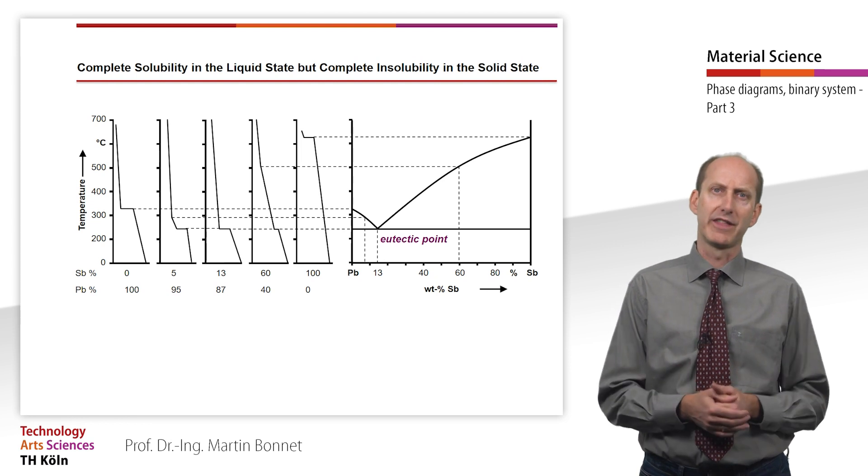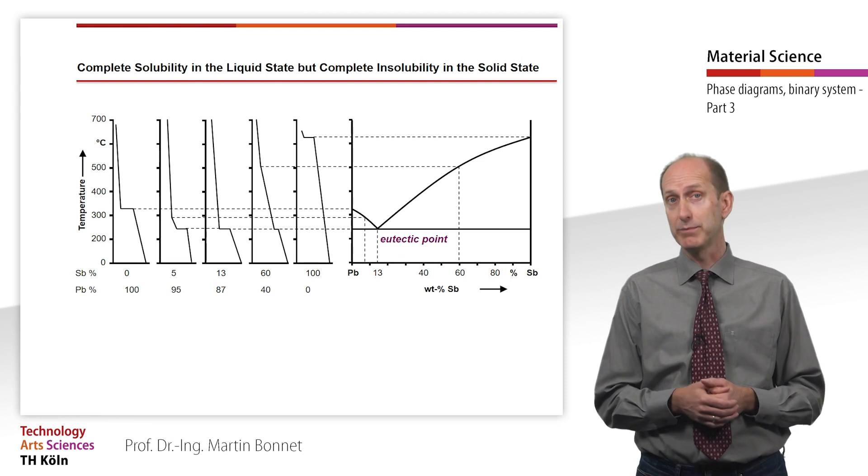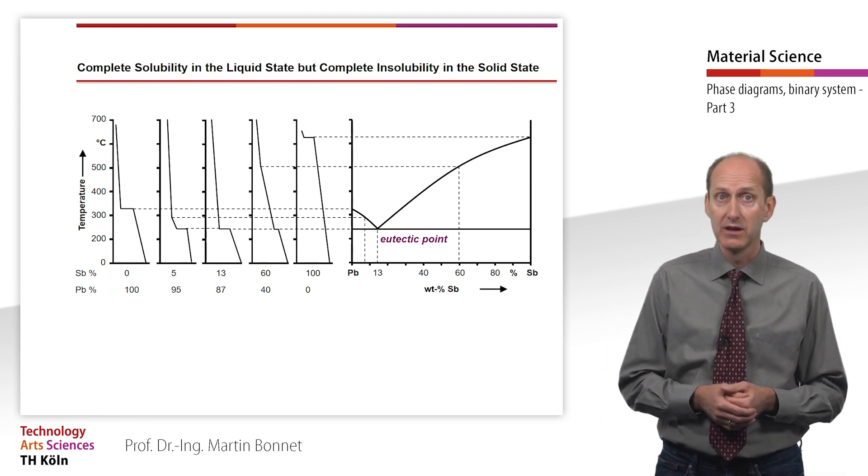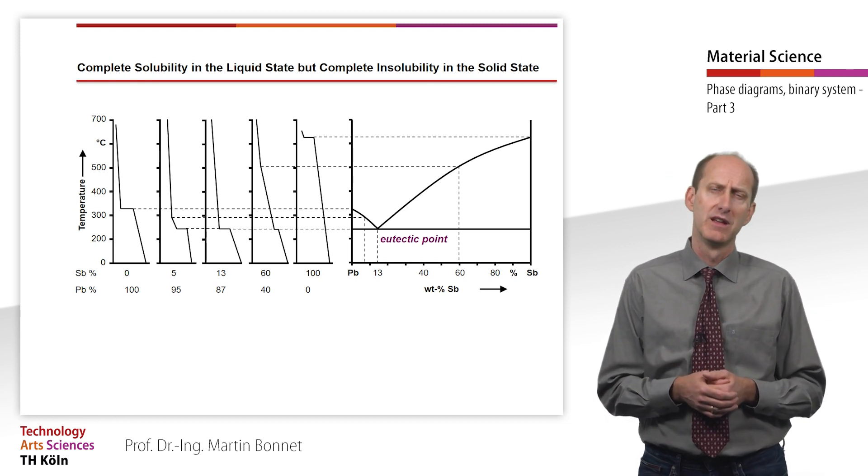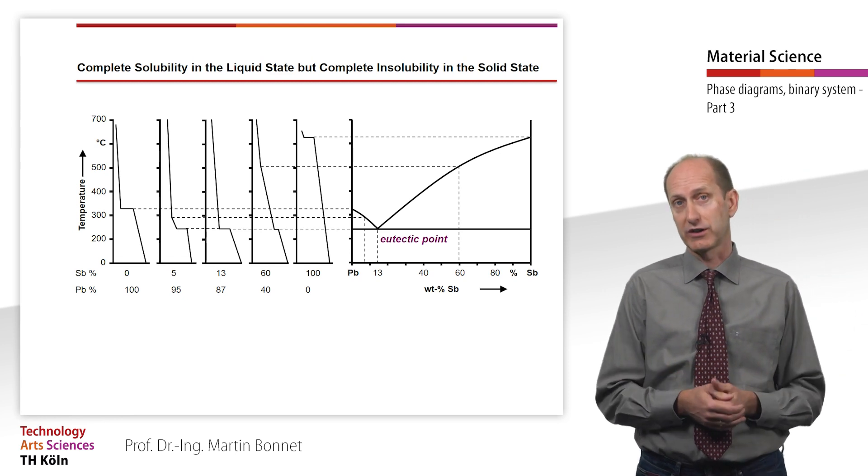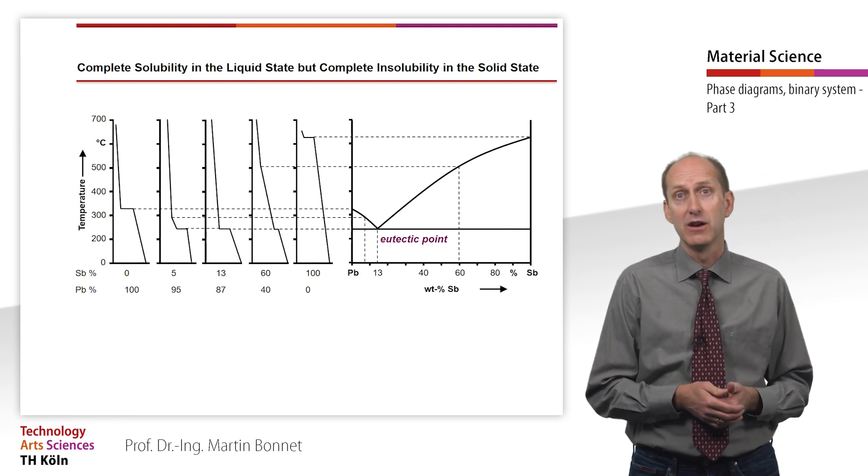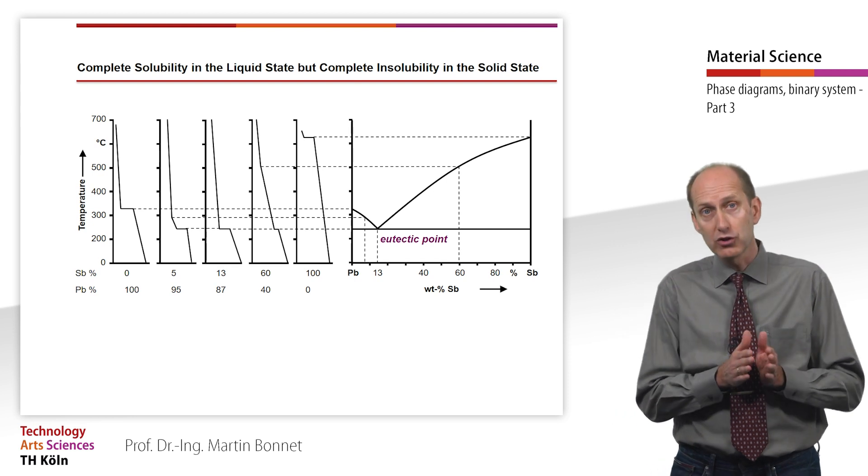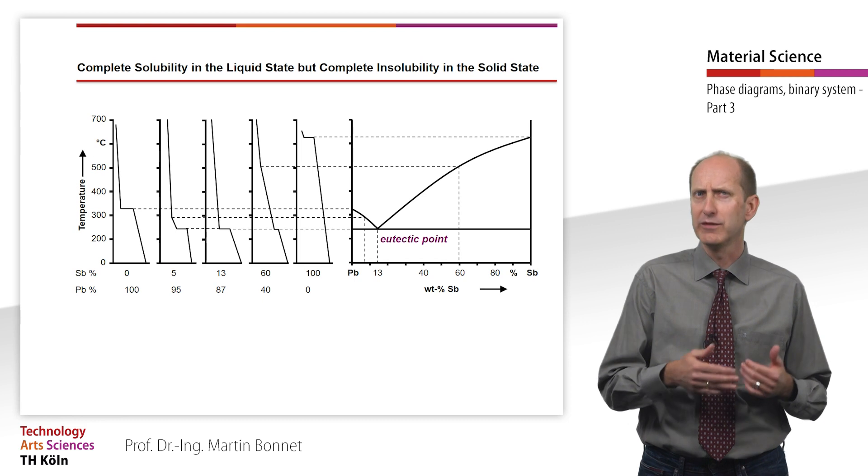Due to the fact that both components solidify at the same time and at a much lower temperature than it would be the case for the pure components, a fine and uniform microstructure is formed that usually exhibits a characteristic lamellar structure. The reason for this lies in the low kinetic energy of the atoms at this temperature, which only allows short distances and therefore only the formation of very small crystals, also called crystallites.